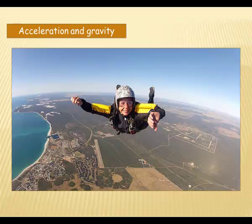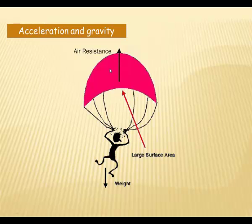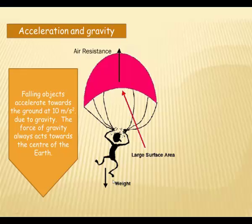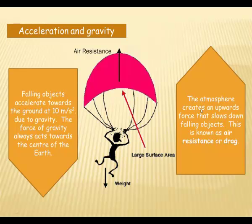Now, let's think about what we call terminal velocity. This skydiver here is a very brave thing that perhaps one day I'll do. But as the skydiver falls, the skydiver is being subjected to different forces. We've got air resistance, we've got weight pulling downwards. Falling objects accelerate towards the ground at, remember this, the acceleration due to gravity. The force of gravity always acts towards the center of the Earth. So our skydiver is being pulled down at an accelerating speed of 10 meters per second squared. At the same time, the atmosphere creates an upwards force that slows down any falling object. This is known as air resistance or drag.